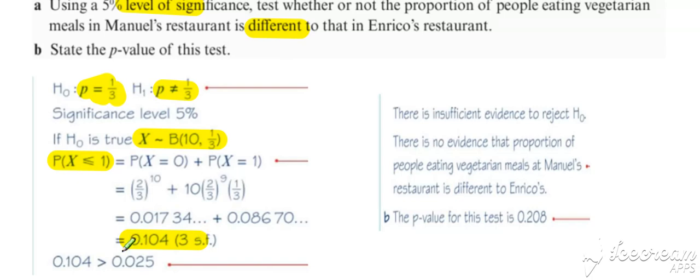And there's your probability. And because it's a two-tail test, we compare with half of the significance level. Again, our probability is greater than the significance level. So there is insufficient evidence to reject H naught. There's no evidence that the proportion of people eating vegetarian meals at Manuel's restaurant is different than Enrico's.